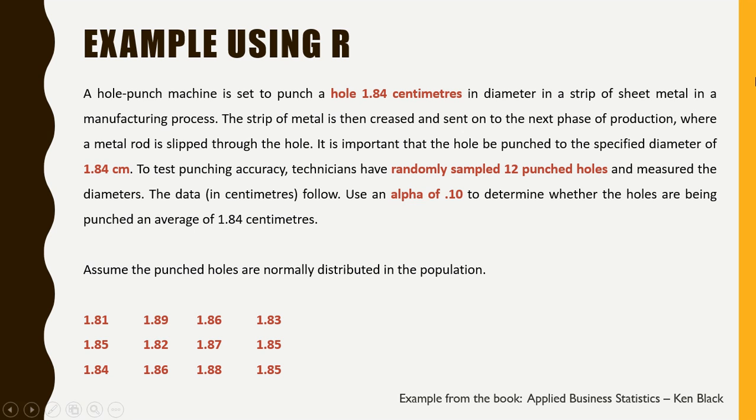Now let us talk about an example which we will be solving in R. The example is taken from the book Applied Business Statistics by Ken Black. A hole punch machine is said to punch a hole 1.84 cm in diameter in a strip of sheet metal in a manufacturing process. The strip of metal is then creased and sent to the next phase of production where a metal rod is slipped through the hole. It is important that the hole be punched to the specified diameter of 1.84 cm. To test punching accuracy, technicians have randomly sampled 12 punched holes and measured the diameters. The data in centimeters follows. Use an alpha of 0.10 to determine whether the holes are being punched an average of 1.84 cm.